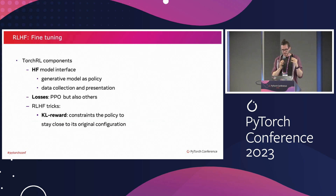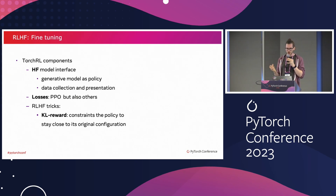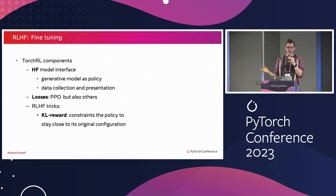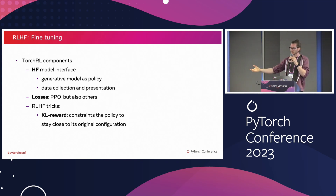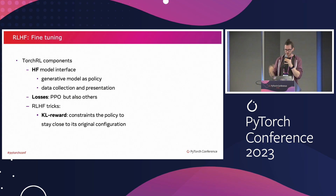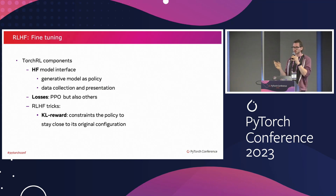The final piece is proper fine-tuning with RLHF within TorchRL. What we propose is an interface to represent data from Hugging Face and interact with Hugging Face models in a convenient way in reinforcement learning. We also propose a whole set of losses for RLHF that you can use exactly like you would in regular reinforcement learning — the PPO loss has the same signature as SAC or DDPG, so if you want to swap this loss with another one, it's going to be very easy. And finally, we also propose tools like the KL reward, which is a constraint to avoid your model deviating too much from its original training.